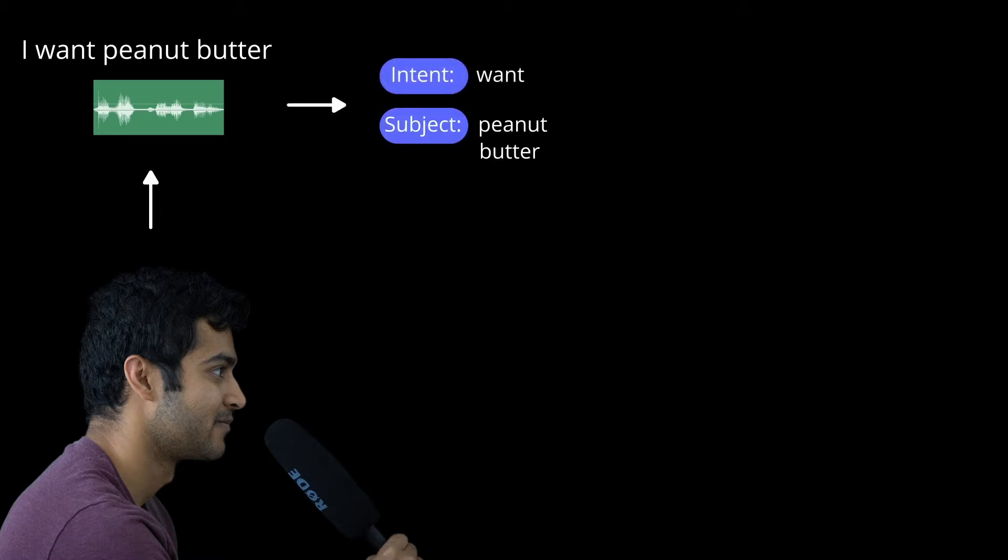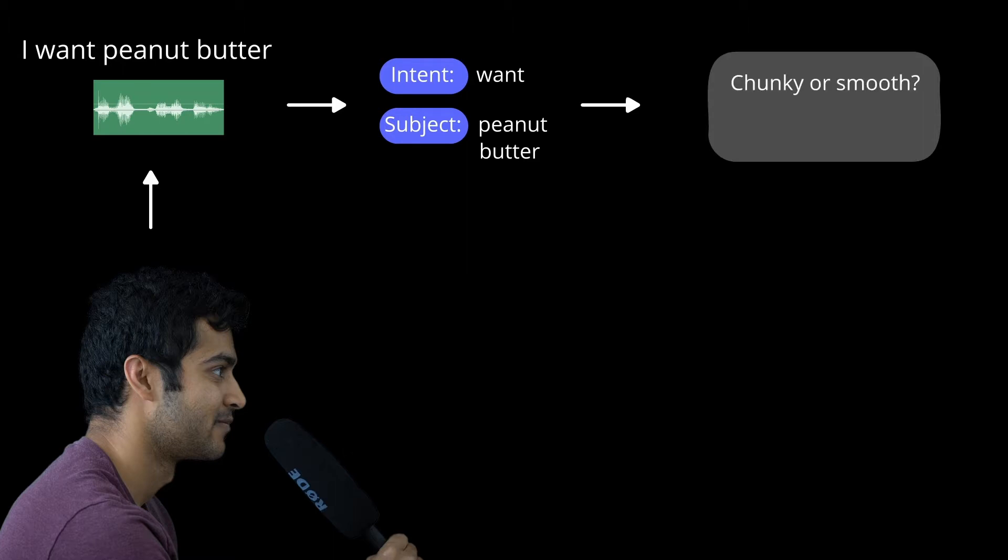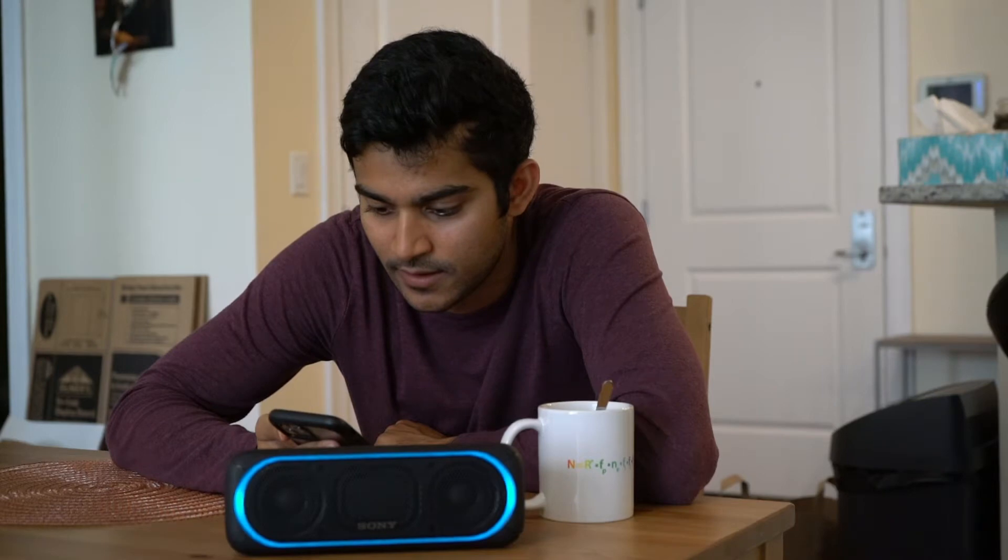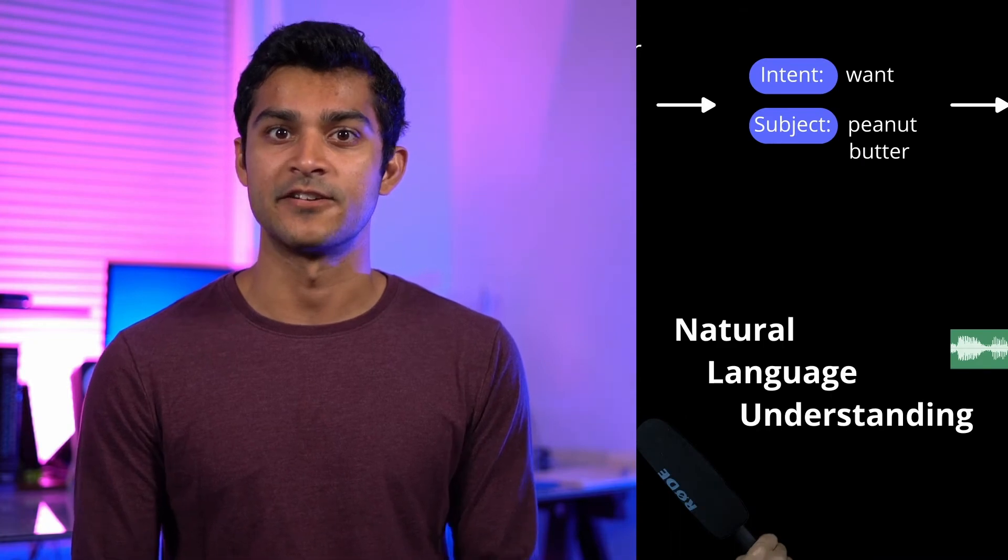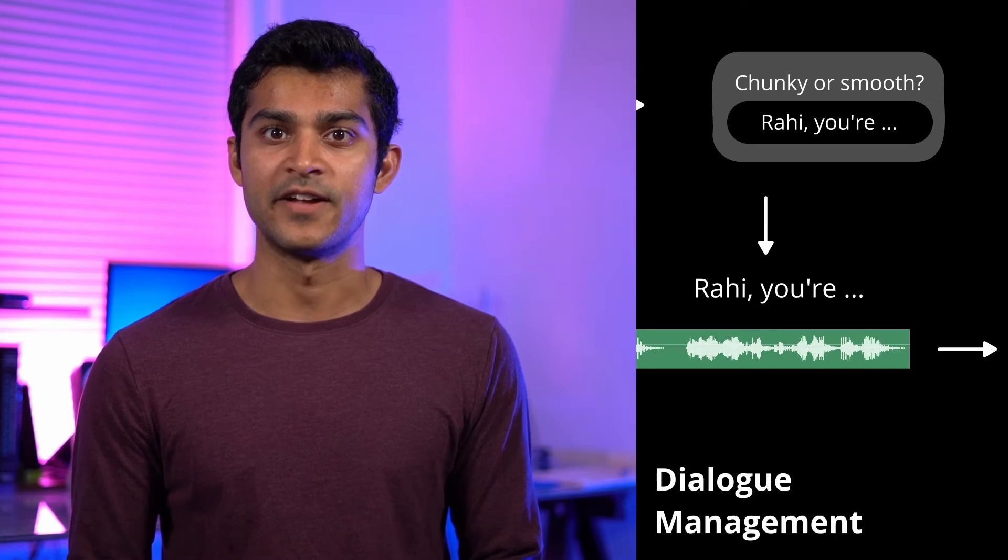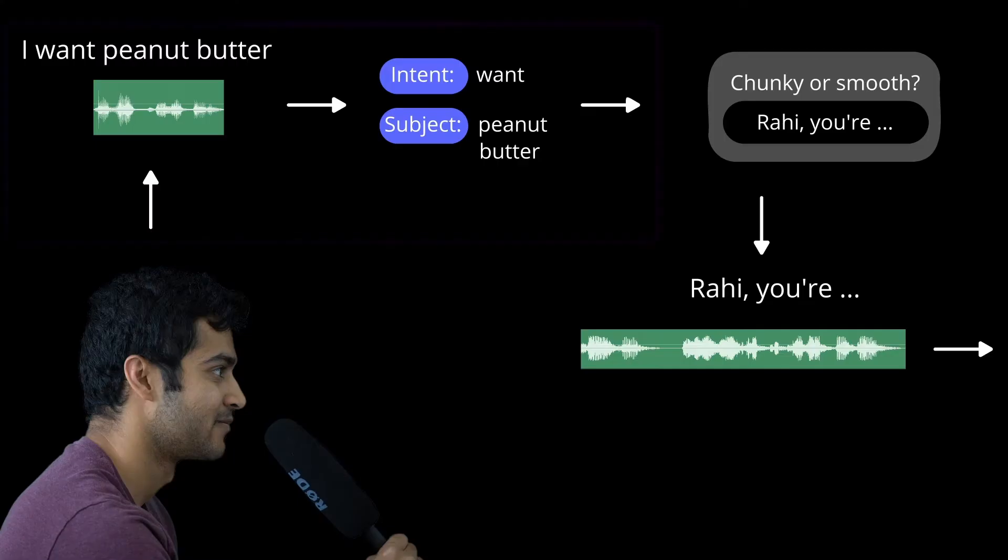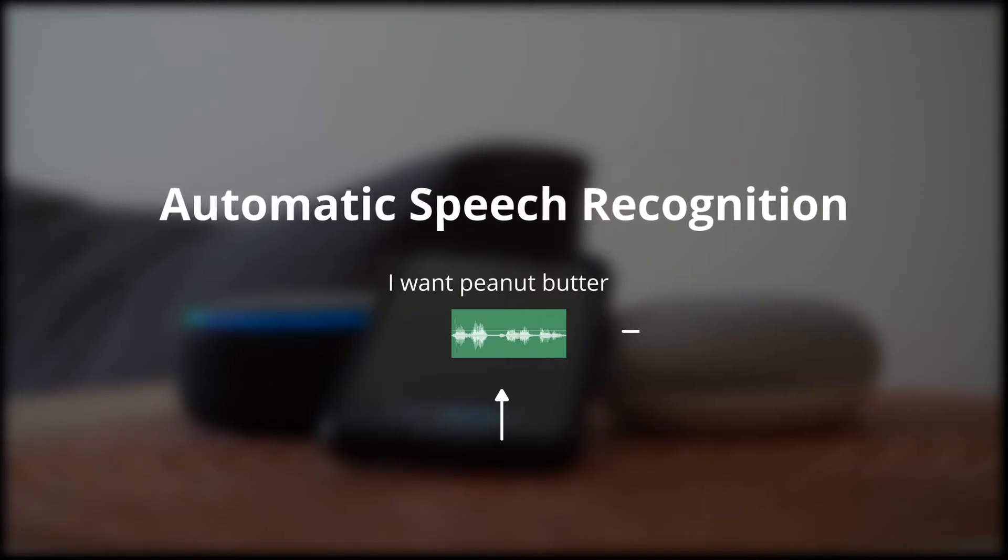Here's the general design for all of them. First your voice gets captured by the microphone. I want peanut butter. The computer then converts the sound waves of your voice into words. Once it has a sentence, it tries to figure out what action you want it to take and what the subject of the action is. Then it needs to figure out how to respond. Does it need more information or is it all set? Finally, when it knows what to say, it needs to convert the text into speech. Rahi, you're allergic to peanut butter. All of these steps are extremely difficult to pull off and some of them have their own fields within computer science. This first one is the field of automated speech recognition. This one is the field of natural language understanding. Both have been researched for decades. This step involves the field of dialogue management and this one is text to speech. But I want to focus on the first two in this video.